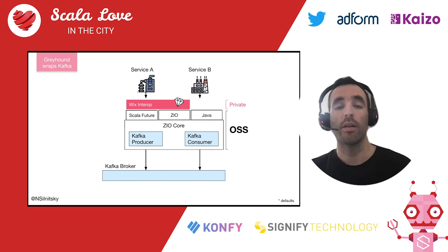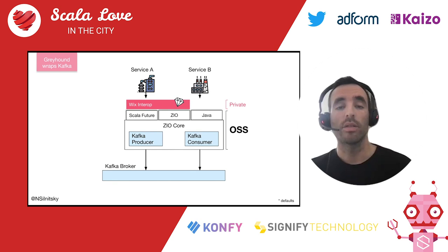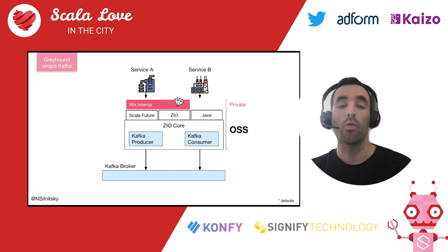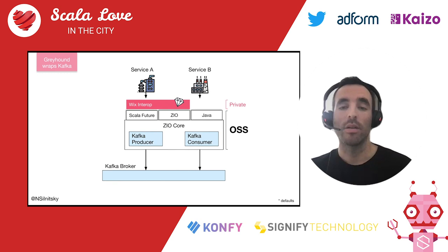At Wix, we also have a Wix interop layer that has all the defaults required for how Wix services use Kafka, so services don't need to re-implement that again and again. We offer ZIO for Wix, but mostly the Scala Future API since almost all JVM microservices at Wix are written in Scala with synchronous or asynchronous futures. We also have the open source flavors I mentioned as well.